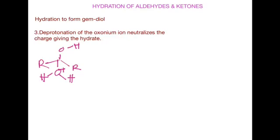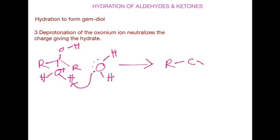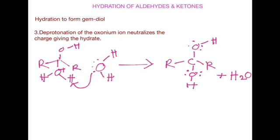Water comes in and, using one of its lone pairs, picks up a proton from the oxonium ion. This results in our desired product — the gem diol — with one alcohol group here and another alcohol group here. The side product is water.